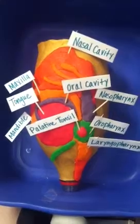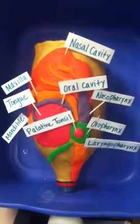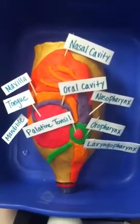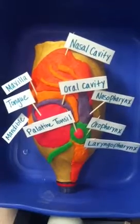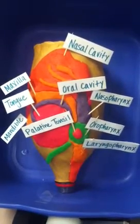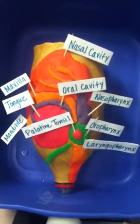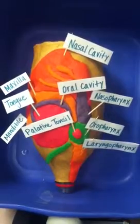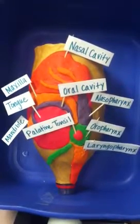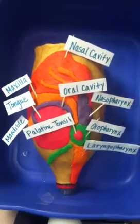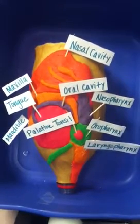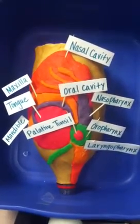Among the oral cavity, there are ten speech articulators — seven mobile and three immobile. The seven mobile articulators include the tongue, mandible, velum, lips, cheeks, pharynx, larynx, and hyoid bone. The three immobile articulators include the alveolar ridge, hard palate, and teeth.